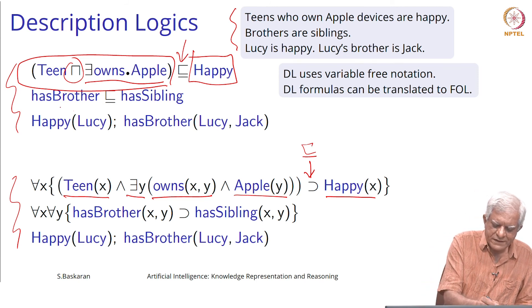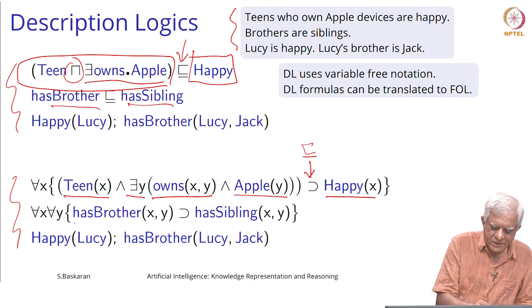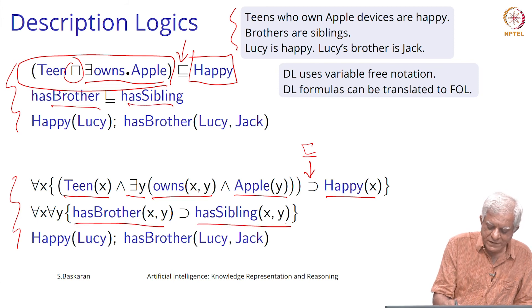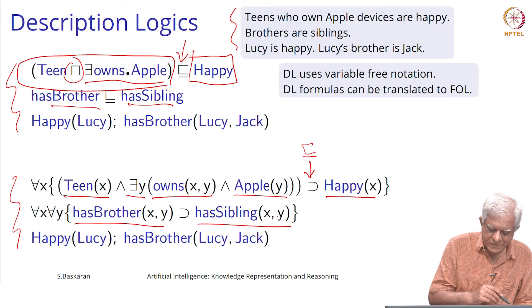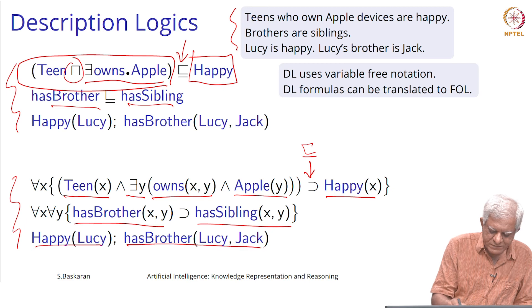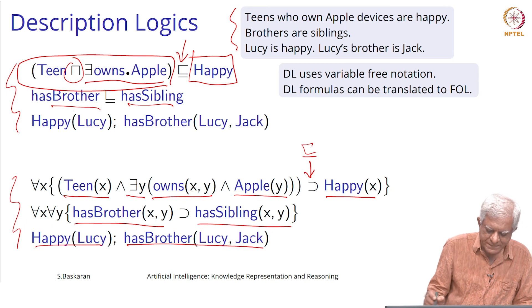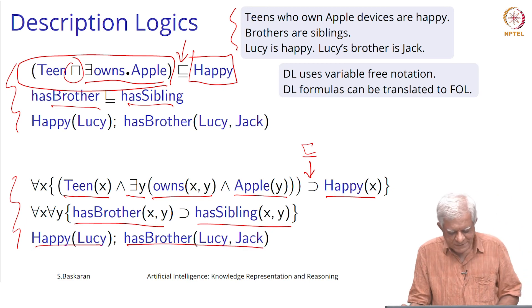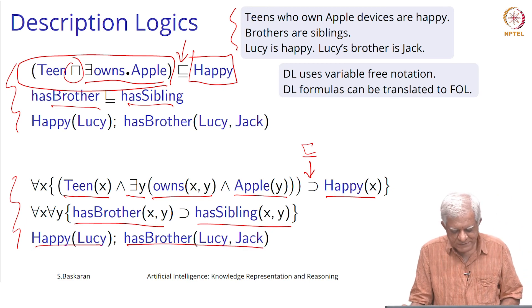Likewise, you can say that brothers are siblings: for all x, y, if x is a brother of y then x is a sibling of y. Then for individuals: Lucy is happy, and Lucy has-brother Jack.